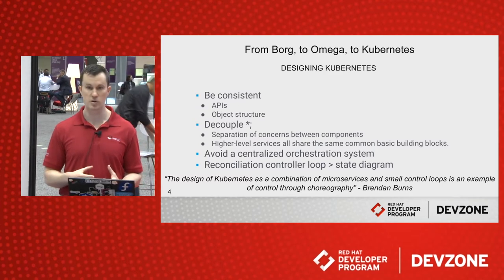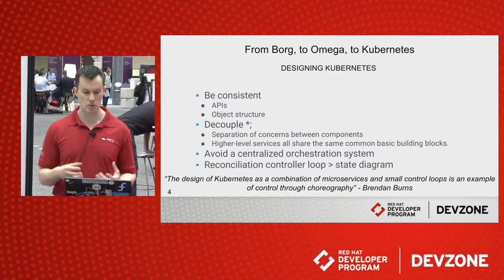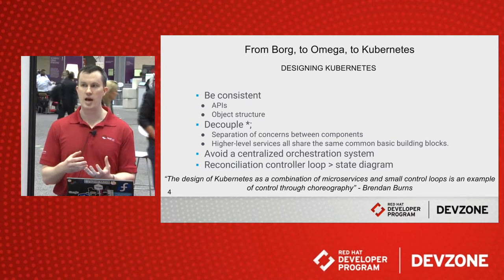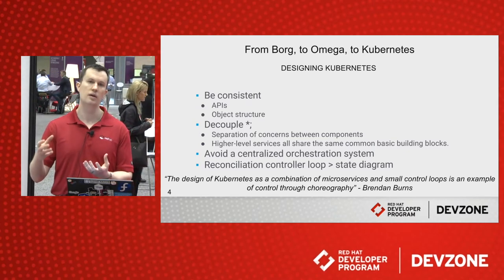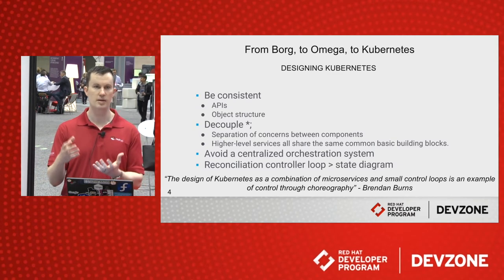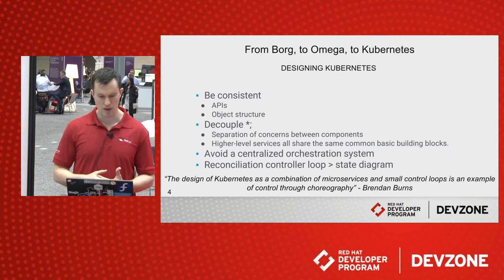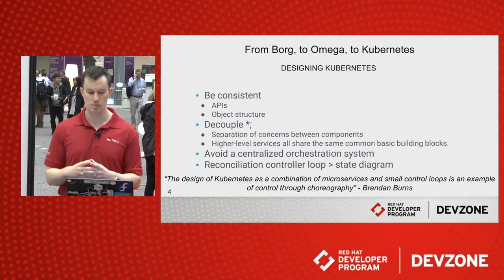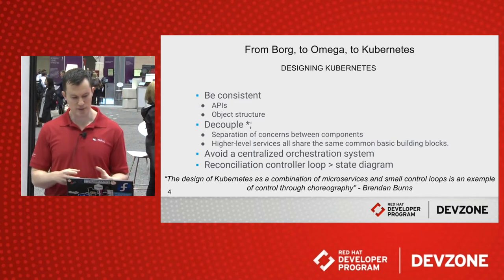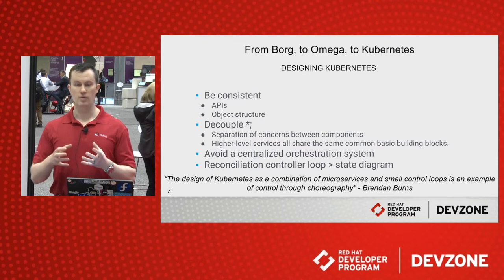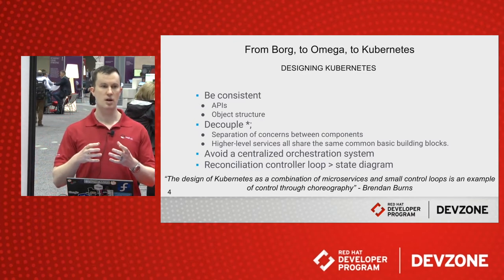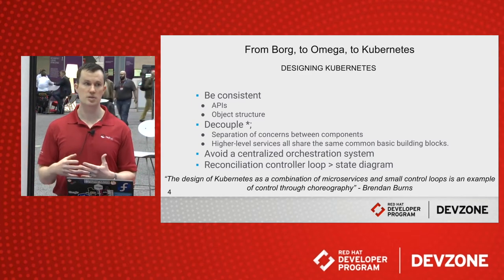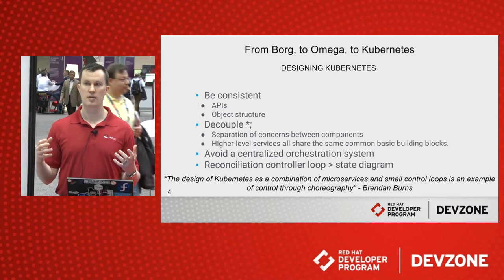There are lots of key things they learned about what not to do. The first thing was they really wanted consistent APIs and object structures — their first tool, Borg, didn't have very good consistency; a lot of things grew ad hoc and by the end of Borg's lifespan it was becoming very hard to manage. They also wanted to decouple separation of concerns but make sure everything shares the same building blocks, really wanting to avoid building a large centralized management tool that can become brittle. The way they built Kubernetes was to create microservices that work in control loops.